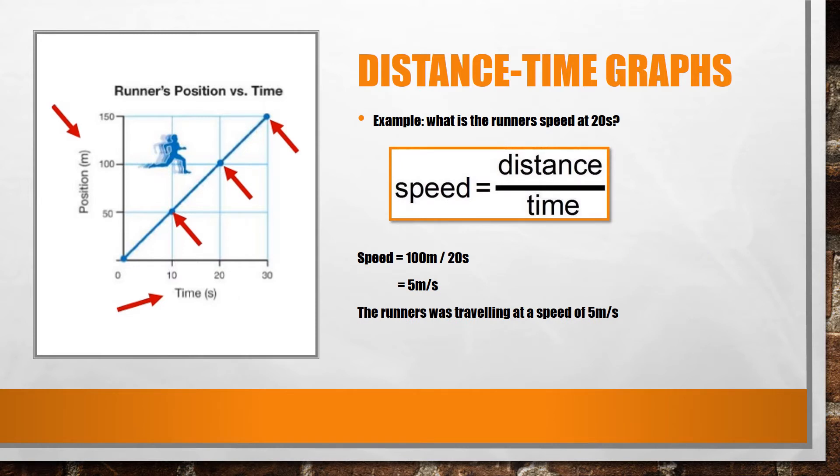But what about speed? To find the speed of the runner using our distance-time graph, we need to introduce our formula for speed. If we wanted to see what the runner's speed was at 20 seconds, we would need both the time, which we are given, as well as the distance he traveled in that time. From the previous slide, we know that it takes the runner 20 seconds to travel 100 meters.